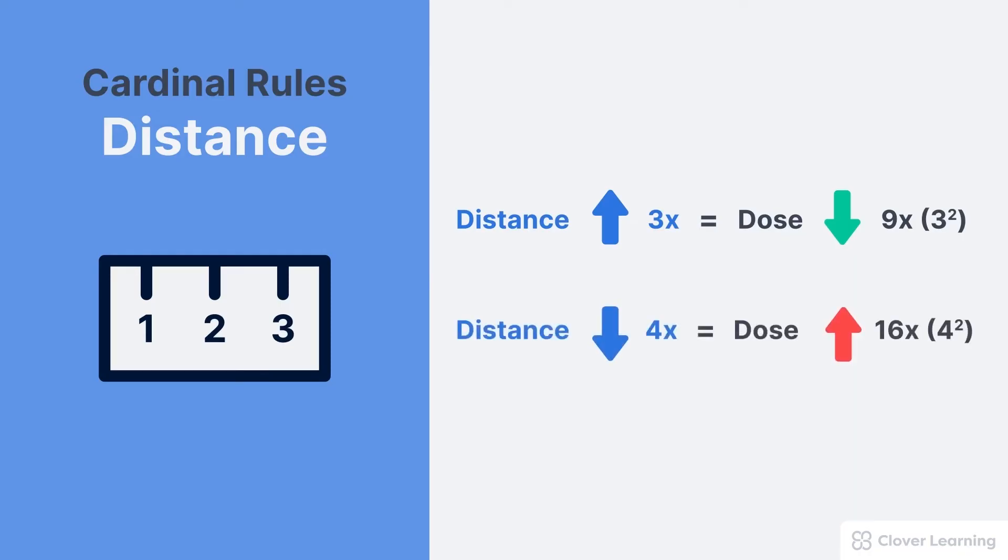If we reduce our distance by a factor of four, dose increases by a factor of four squared, which is 16. For more complex math, we'd need to use the inverse square law formula. But for the purpose of this lesson, just understand that increasing your distance from the patient is a very simple and effective way of decreasing your dose.